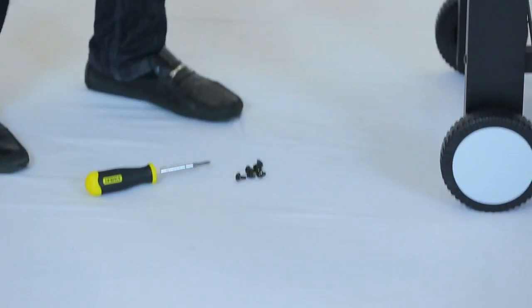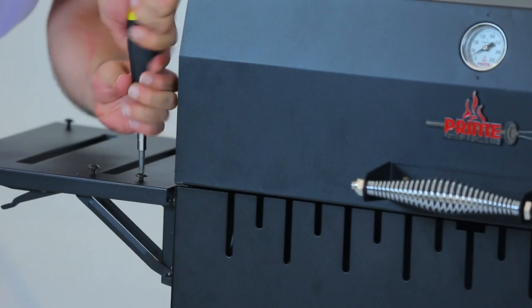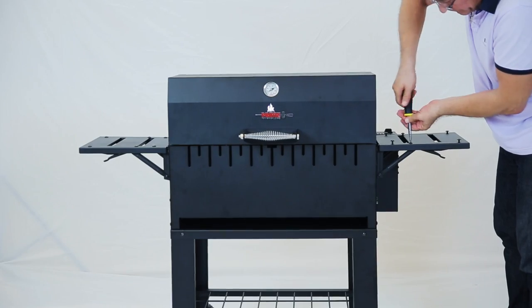Step 16. Now place each shelf and the folding brackets on the right and left side of the grill and attach with 6 bolts.